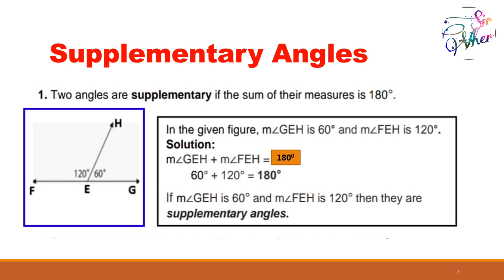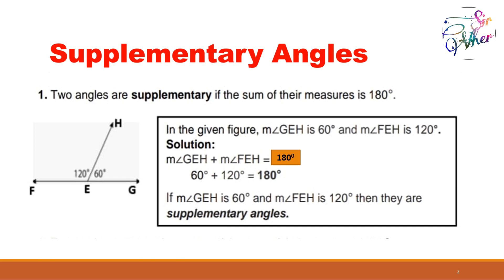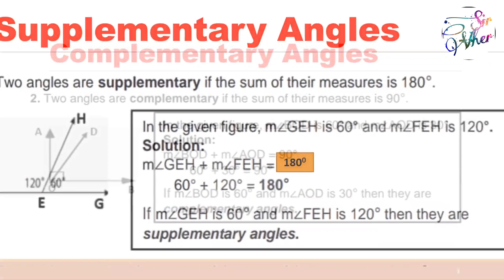If we are going to get the sum, we simply combine the two angles. Angle GEH plus angle FEH equals 180 degrees. The measure of angle GEH is 60 degrees and the measure of angle FEH is 120 degrees, which equals 180 degrees. Therefore, these two angles are supplementary.